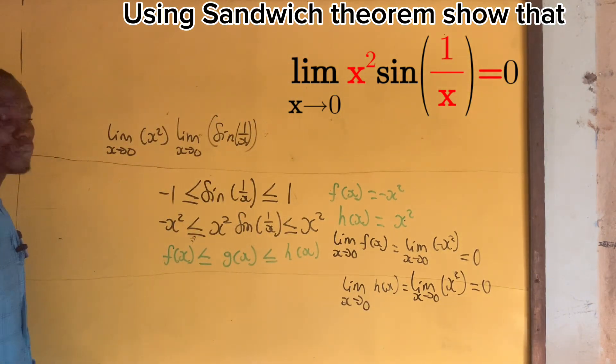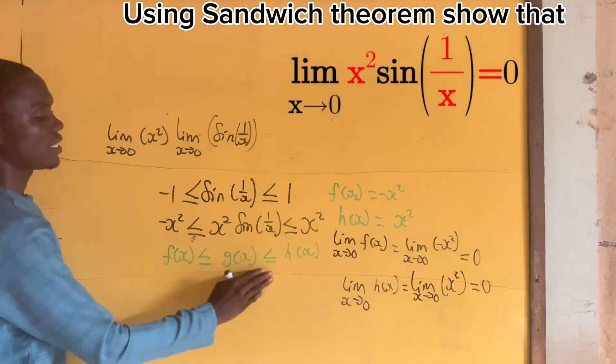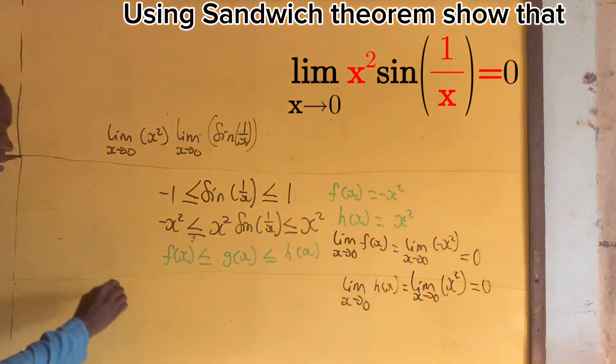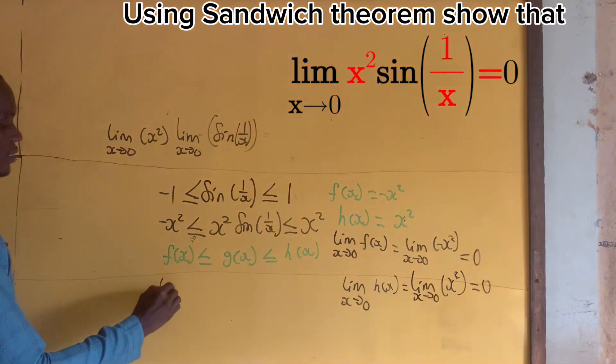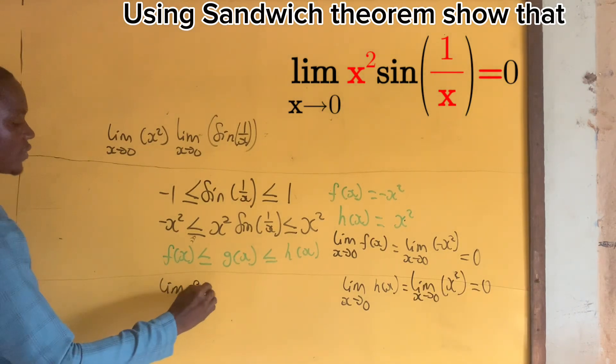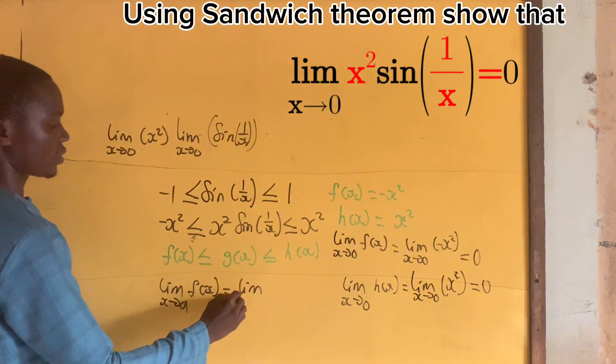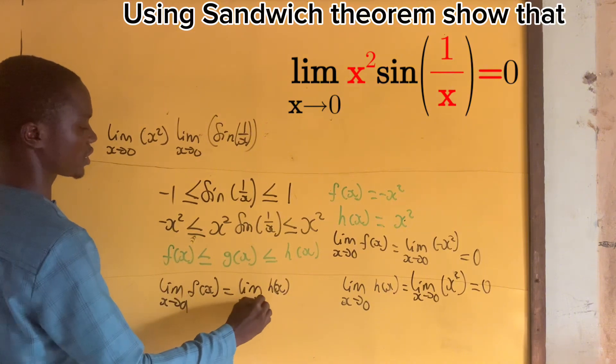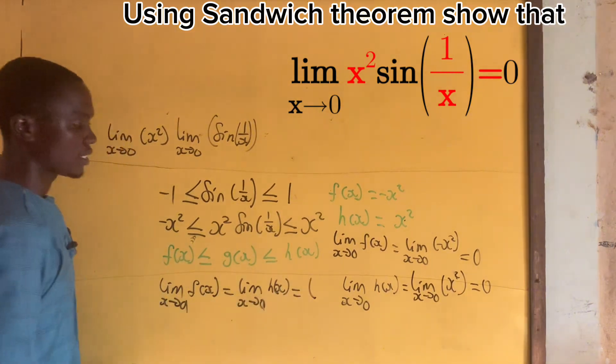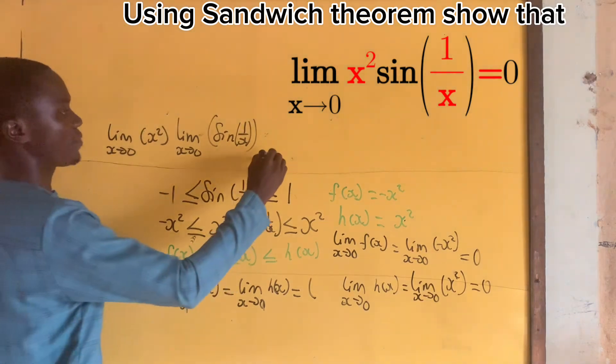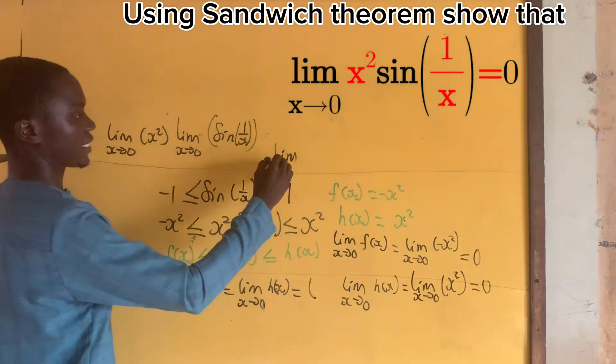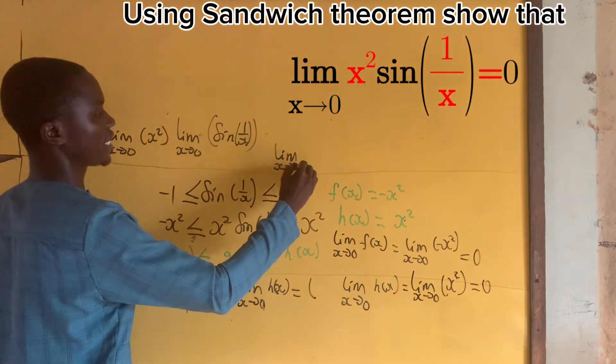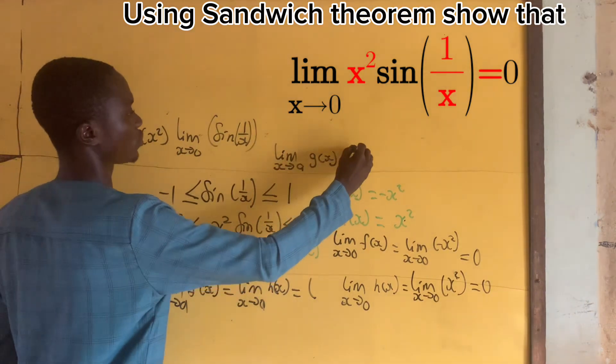So, the sandwich theorem states that if you have f(x) ≤ g(x) ≤ h(x), and the limit of f(x) as x approaches a is equal to the limit of h(x) as x approaches a equals L, well, then the limit as x approaches a of g(x) is equal to L.